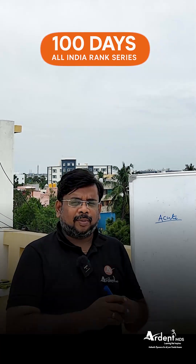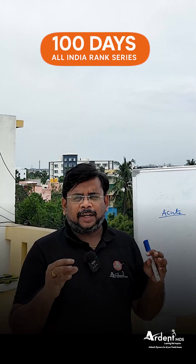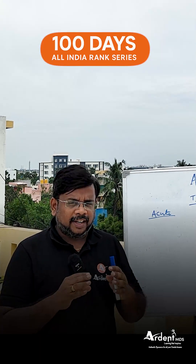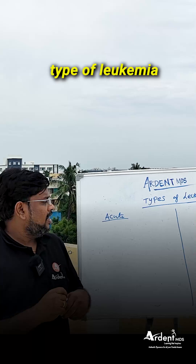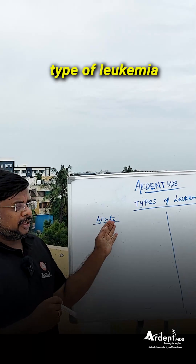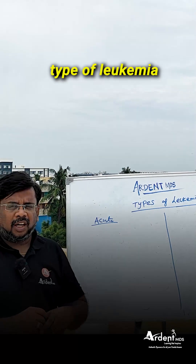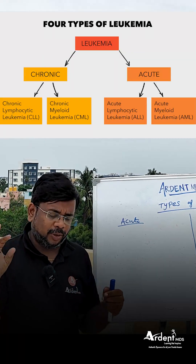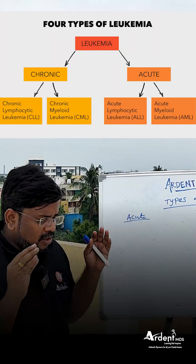Students, today we are going to see something which is a very important topic in general pathology in our 100-day series, which is types of leukemia. Acute leukemia and chronic leukemia are the two types.